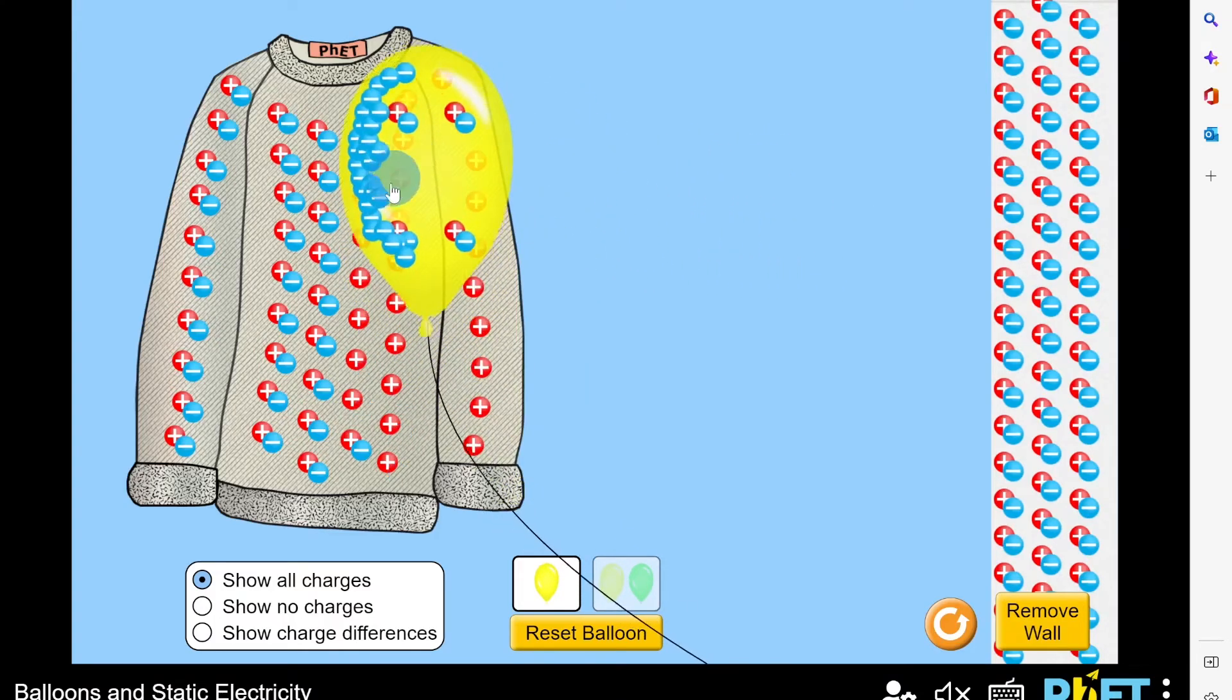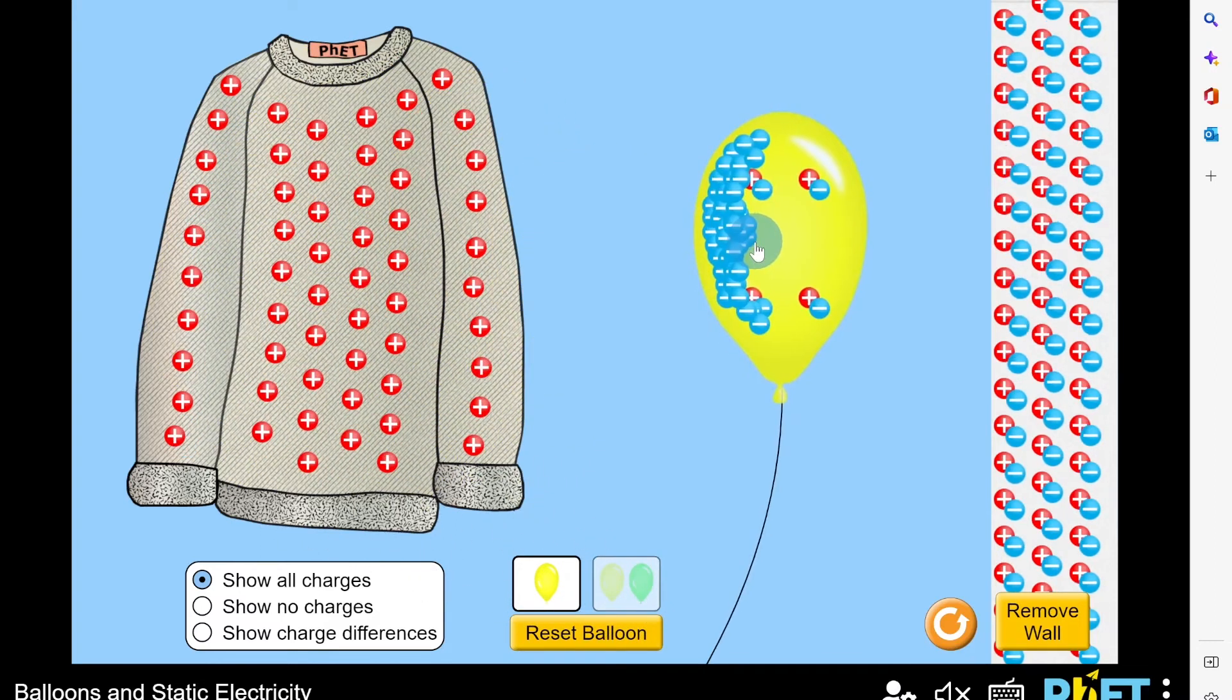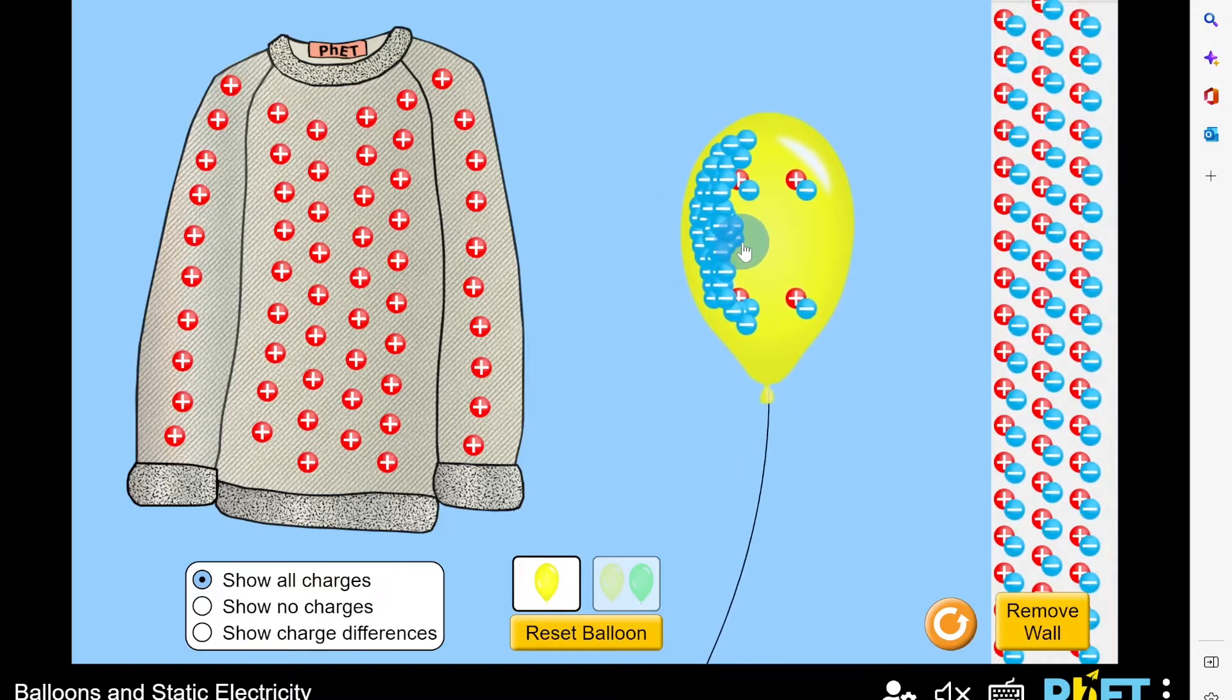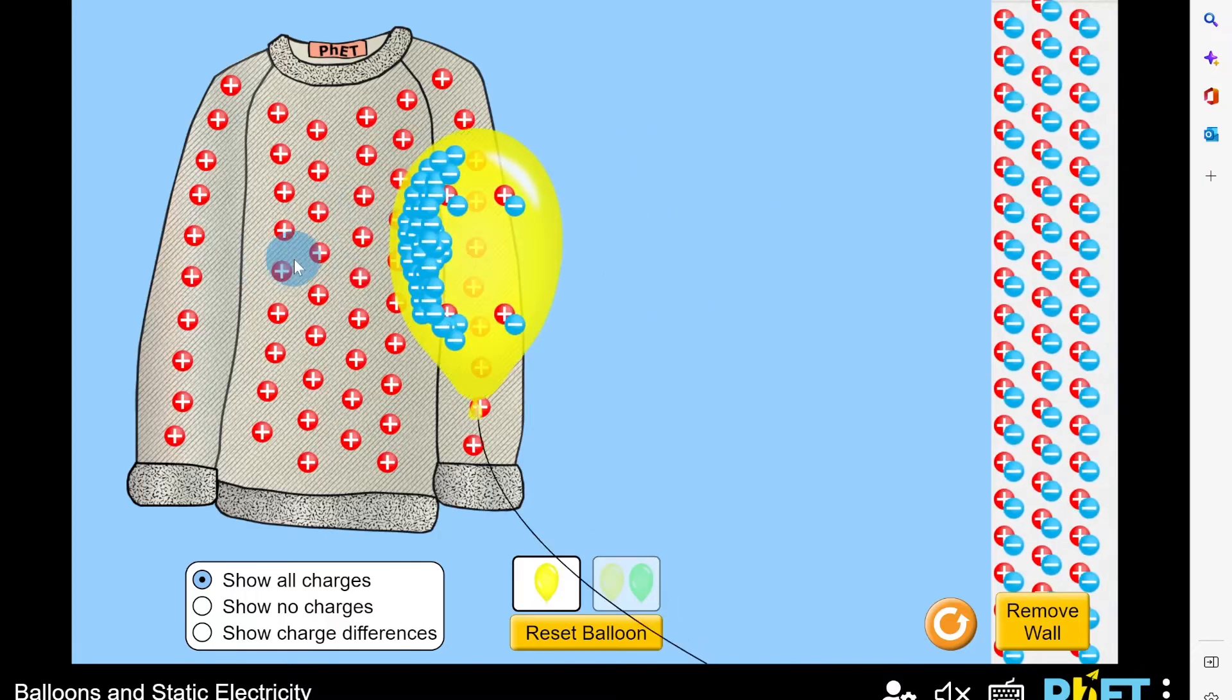If we bring this neutral balloon close to our jumper, you'll see it starts to build up lots of negative charge on the left hand side of the balloon. And that leaves behind a positive charge on the jumper. So right now we've got a balloon which has a majority negative charge and a jumper which is positively charged. And we know that positive and negative charges will attract each other. So if I let this balloon go, it's going to be attracted towards the positively charged jumper.